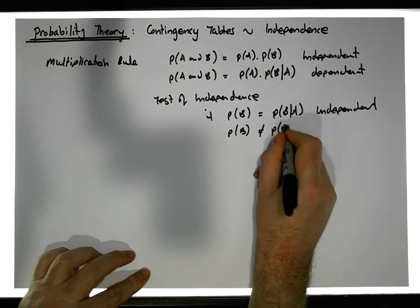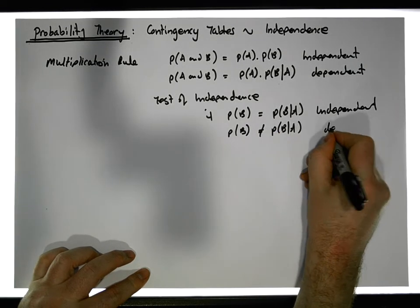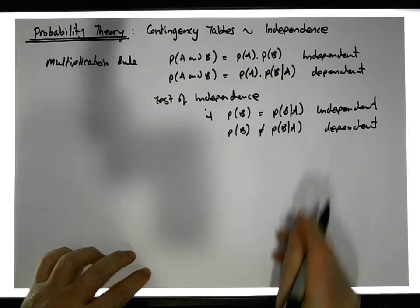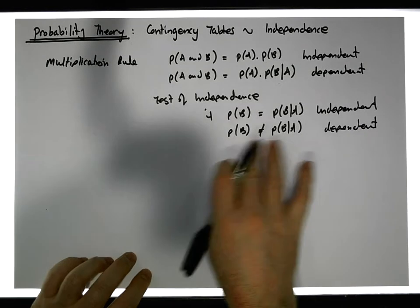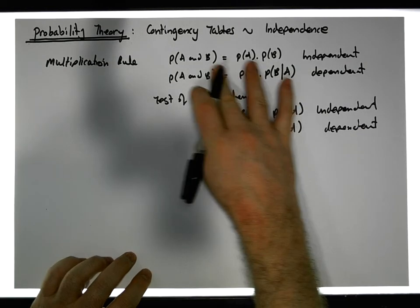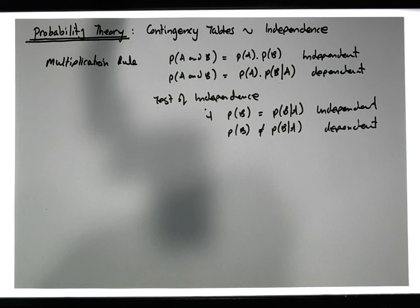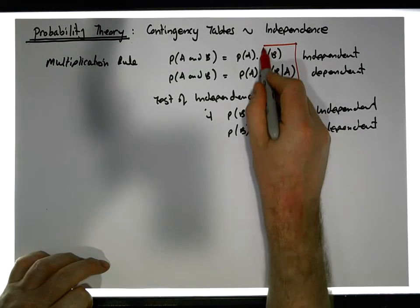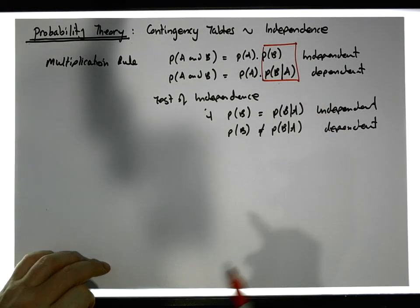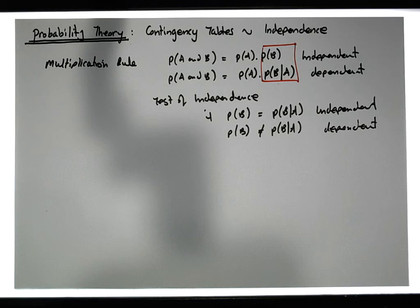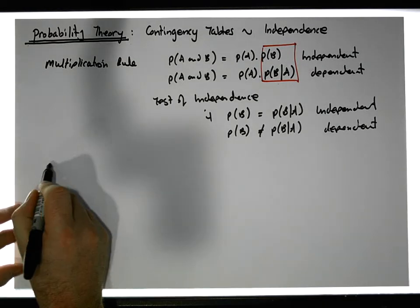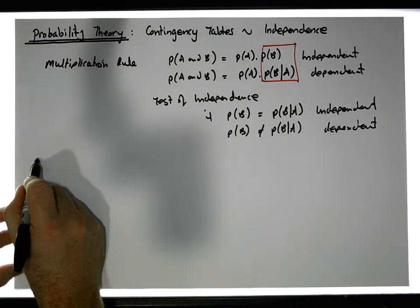If the probability of B is not equal to the probability of B given A, then we have a dependent situation. We really need to explore both forms of the multiplication rule to see whether we have independent or dependent events. The way we're going to do that is by looking at a contingency table.